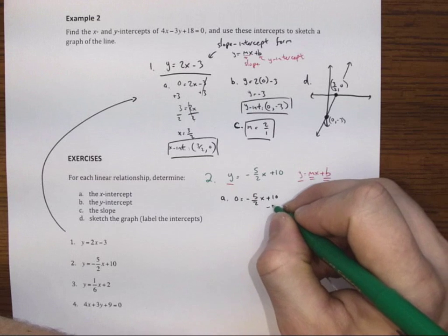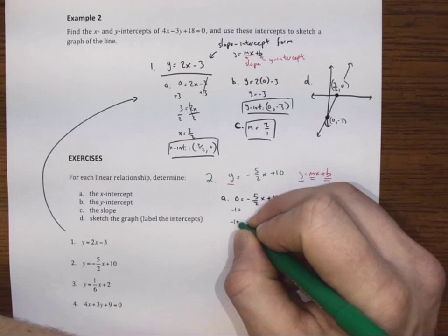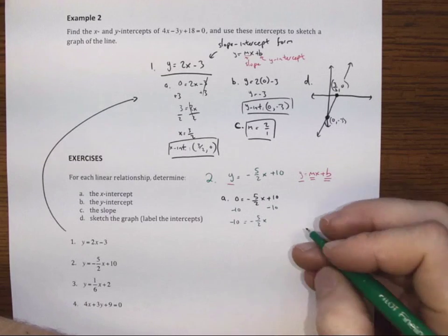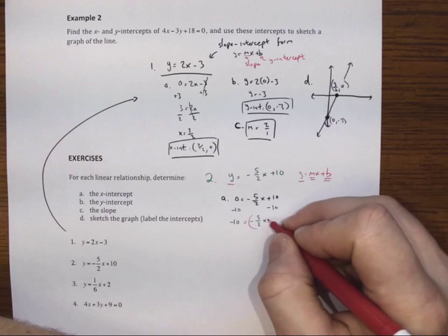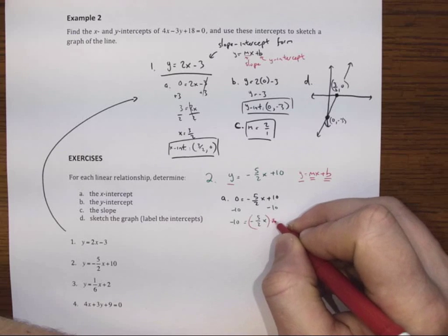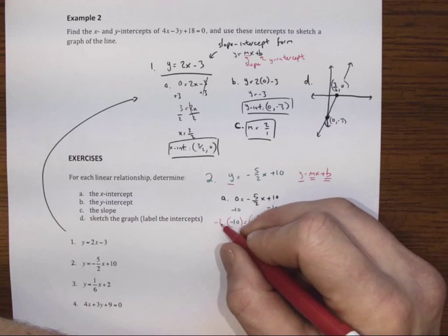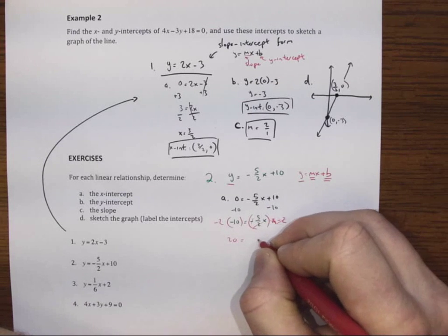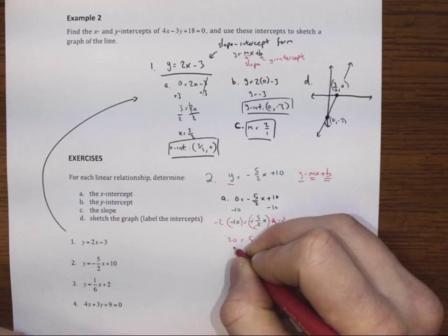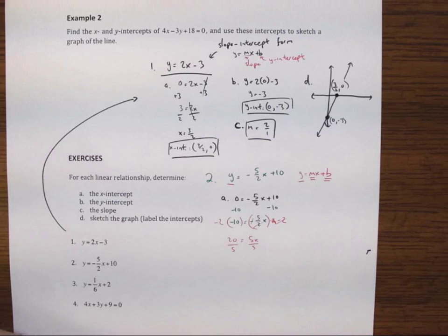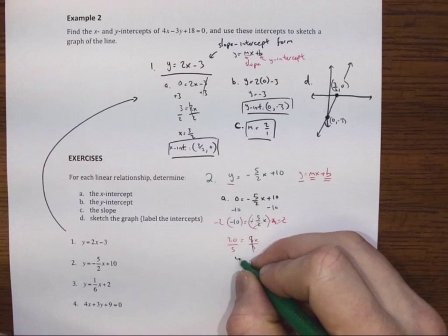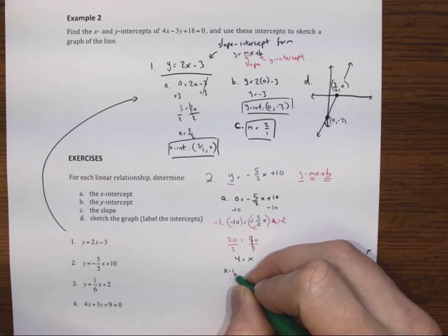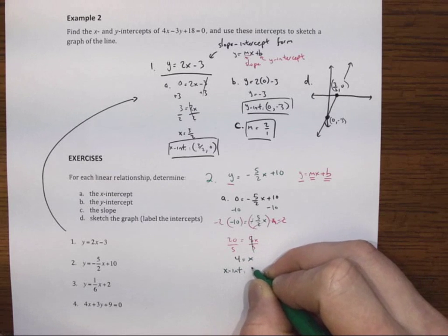I'll take away 10 from both sides and that gives us negative 10 is equal to negative 5 halves of x. I will multiply by negative 2. And it cancels these guys out. And I get 20 is equal to 5x. Divided by 5. And I get 4 is equal to x. So therefore my x-intercept is at 4, 0.